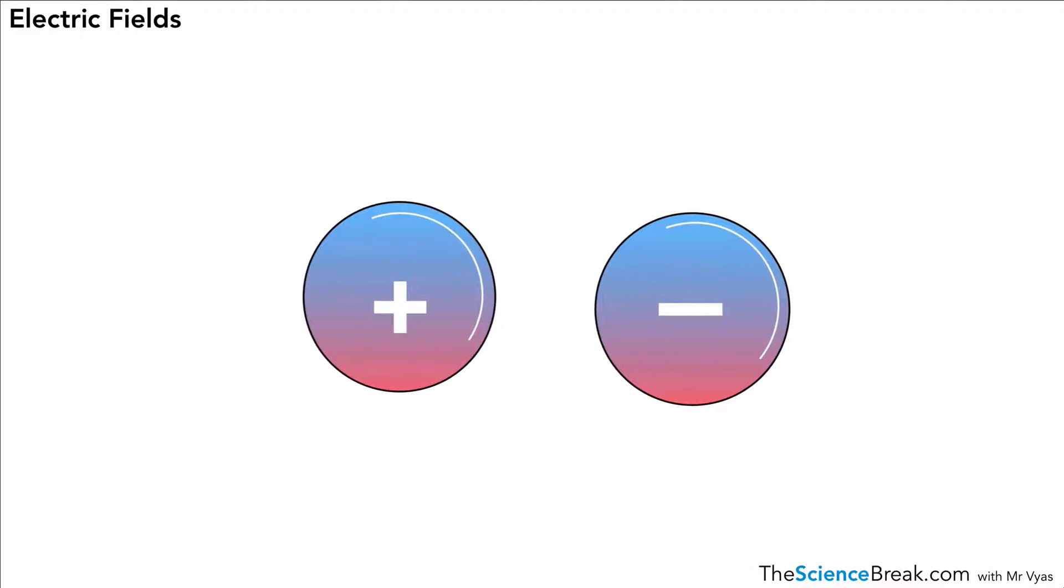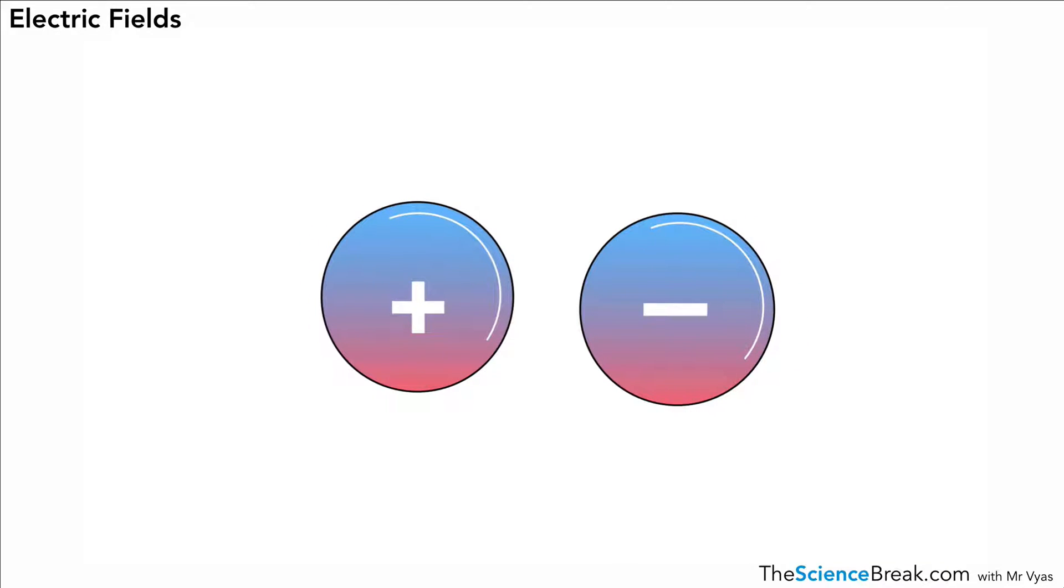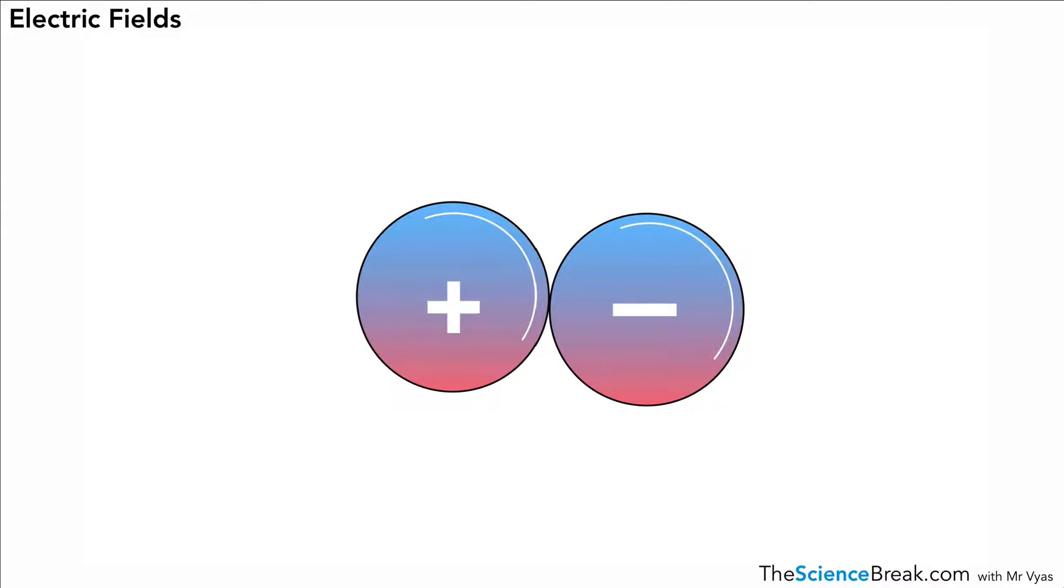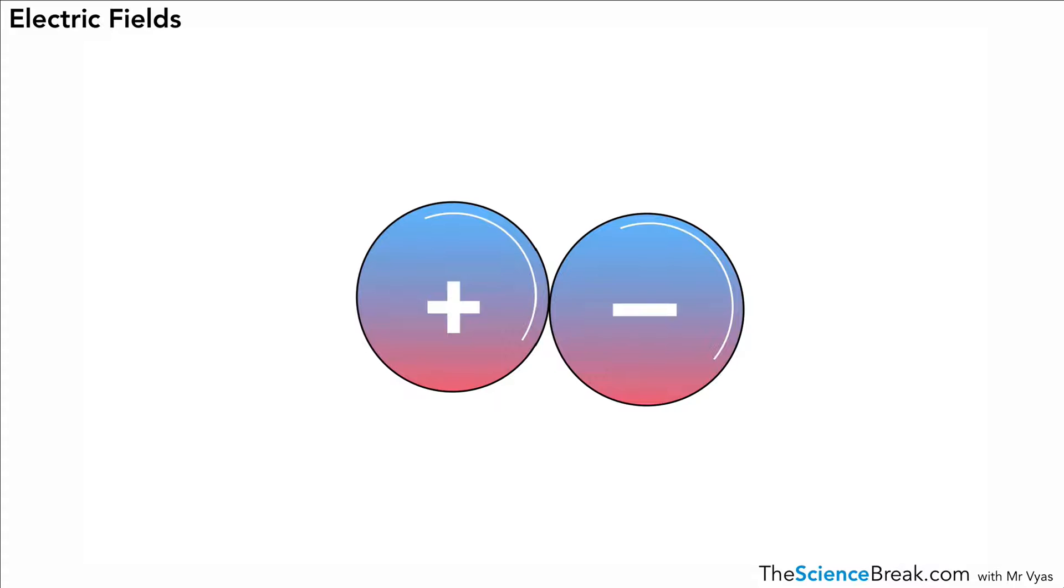These two will attract each other quite weakly at first, but when they get close they will attract each other with a much stronger force of attraction. So the electric field is stronger the nearer those two objects are to each other.